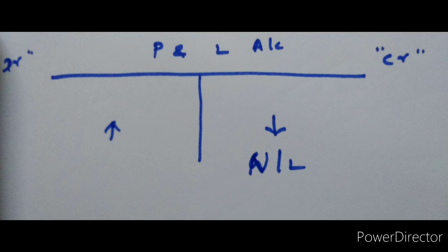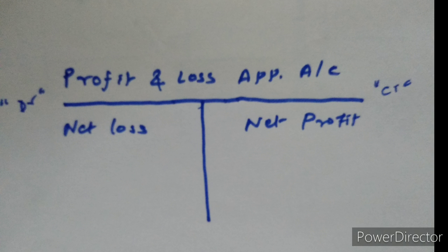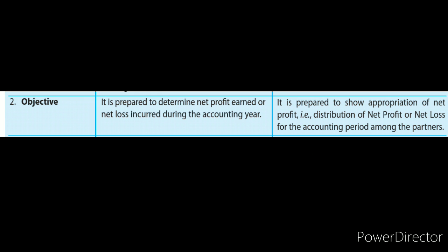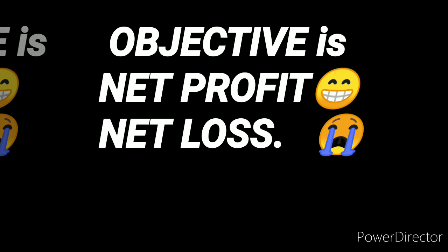Second difference — objective. The Profit and Loss Account is prepared to determine net profit or net loss incurred during the accounting year. Its sole purpose is determining whether there is net profit or net loss during the year.